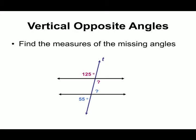Find the measures of missing angles. One angle is given as 125°. Both angles are vertically opposite angles, so their measurements are equal — the missing angle is also 125°. Another example: one angle is 55° and the other angle, which is its vertically opposite angle, will also be 55°.